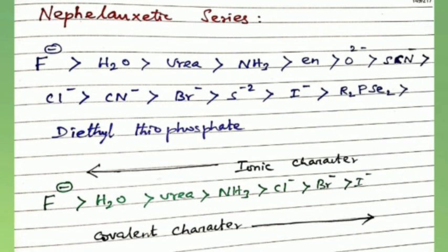In the nephelauxetic series, which ligand has more reduction value indicates more covalent character. This series shows that I⁻ or Br⁻ ligands result in a greater reduction in inter-electronic repulsion in the ion than the F⁻ ion.